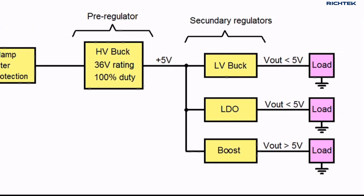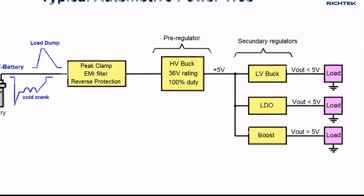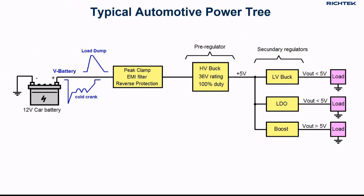The pre-regulator generates a lower voltage, often 5 volts, which is then sent to the secondary regulators. These can be buck, LDO or boost, depending on the voltage rails they need to supply.